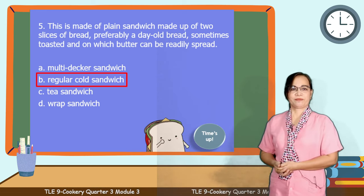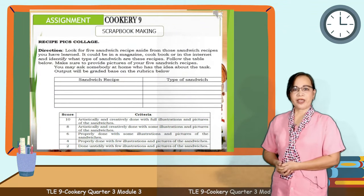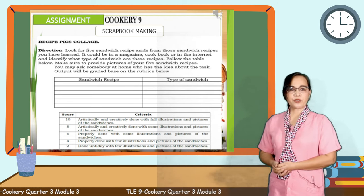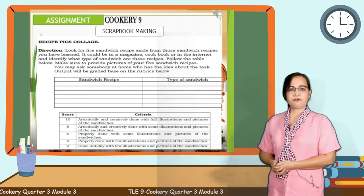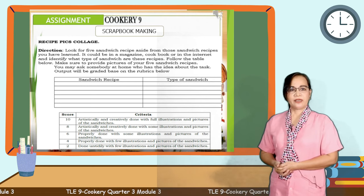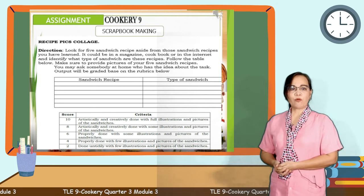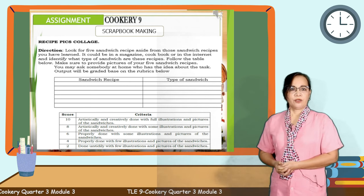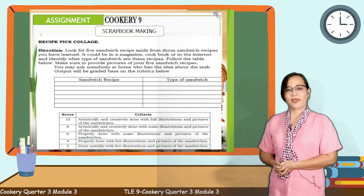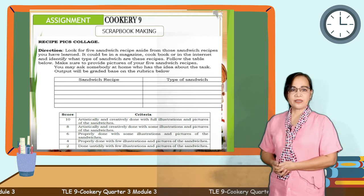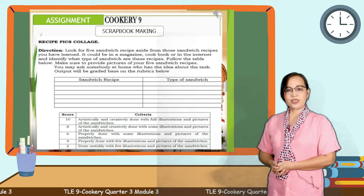Now, for your assignment, answer the activity on page 10 of your SLM. Look for five sandwich recipes aside from those you have learned. It could be in a magazine, cookbook, or on the internet, and identify what type of sandwich each recipe is. You may also ask somebody at home who has an idea about the task. Compile your recipes and make a scrapbook. For your reference, use TLE 9 SLM Quarter 3 Module 3, Types of Sandwiches, on page 10.